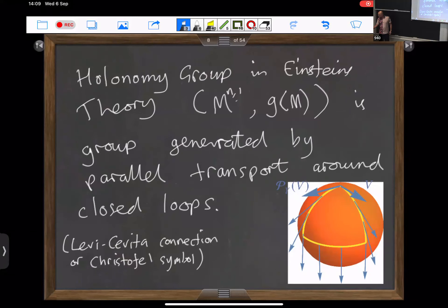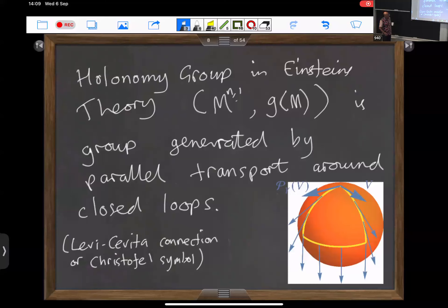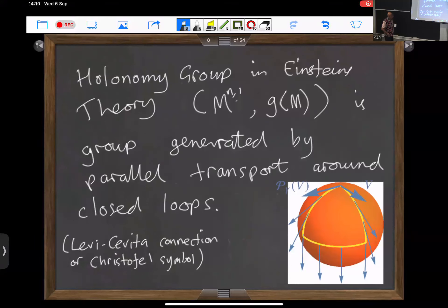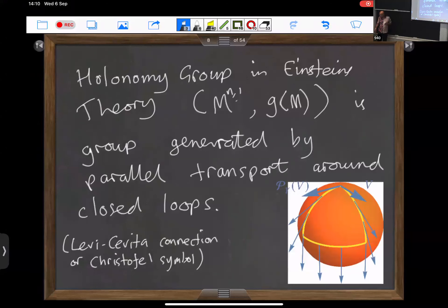Let me remind you what holonomy is. Holonomy is a concept that arises in Einstein's theory. Einstein's theory of relativity is based on a spacetime manifold M and has a field which is a symmetric tensor on M. Out of this metric tensor you can generate the covariant derivative, sometimes called the Levi-Civita connection, or in GR books, the Christoffel symbols. Using this connection, you can consider the parallel transport of vector fields around a closed loop.